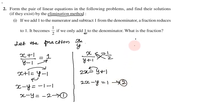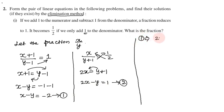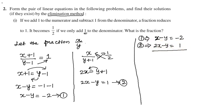Now we will solve using the elimination method. The y coefficient is the same in both equations. First equation: x minus y equals minus 2. Second equation: 2x minus y equals 1. Since the signs are the same, we subtract.